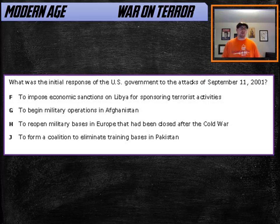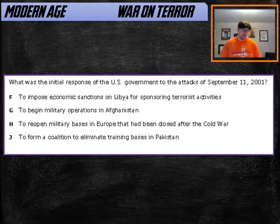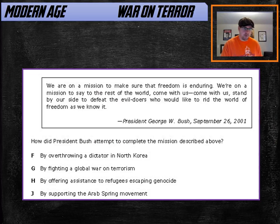What was the government's response to 9/11? The first response was to go after those responsible — the terrorist group al-Qaeda. They were being housed in Afghanistan, so the initial response was to begin military operations in Afghanistan. That was the immediate result of the 9/11 attacks.